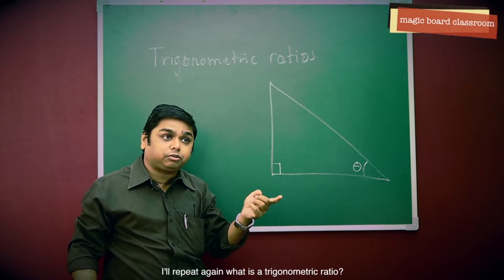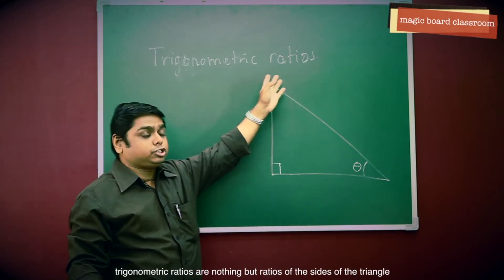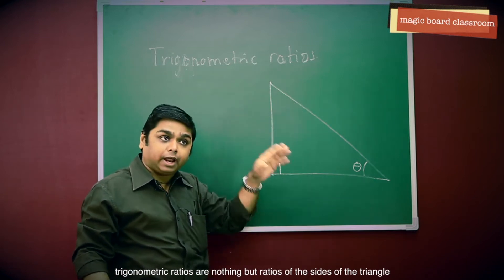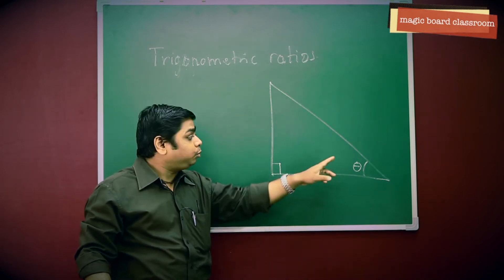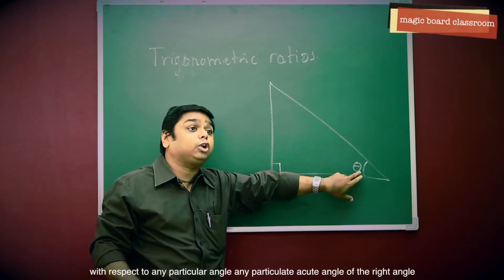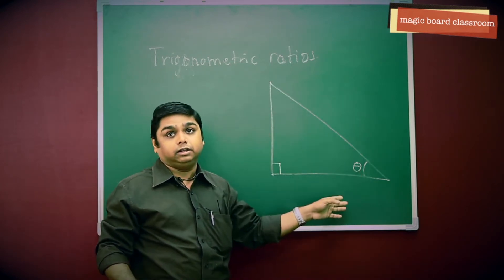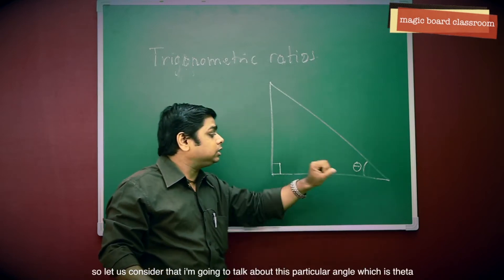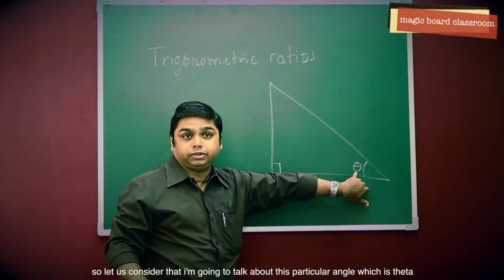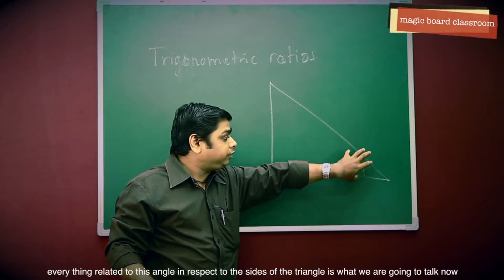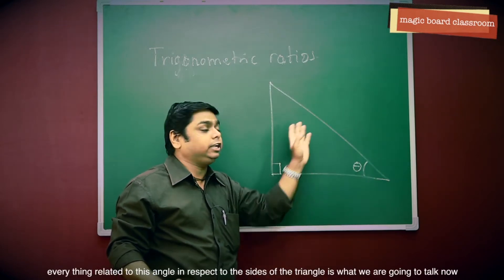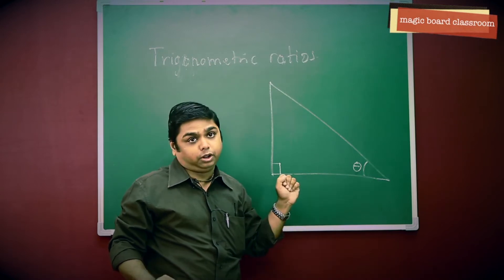What is a Trigonometric Ratio? Trigonometric Ratios are nothing but ratios of the sides of the triangle with respect to any particular acute angle of the right angle. Let us consider that I am going to talk about this particular angle which is theta. Everything related to this angle in respect to the sides of the triangle is what we are going to talk about.